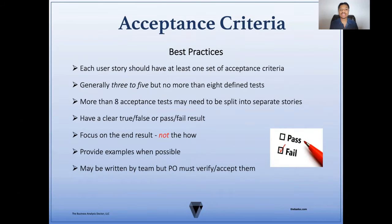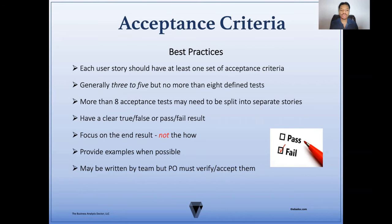Now let's look at some best practices for acceptance criteria. Typically, each story should have at least one set of acceptance criteria, generally three to five statements, but no more than eight defined tests. If you have more than eight acceptance tests, the story may need to be split into separate stories. Also, you want to have a clear true-false or pass-fail result, and always focus on the end result, not the how. Be sure to provide examples when possible. And acceptance criteria may be written by team members, but the product owner or customer definitely needs to be the one to verify and accept them.